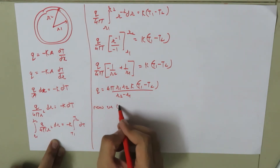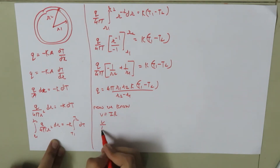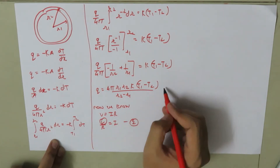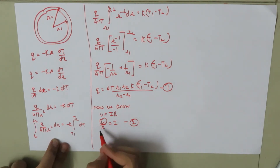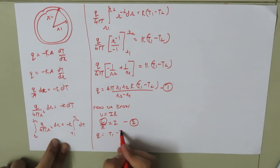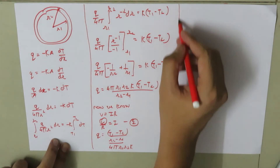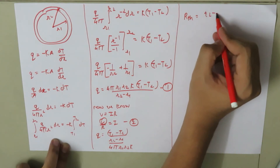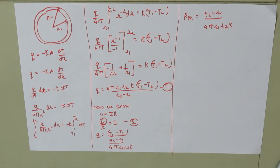According to Ohm's law, V equals IR, so V divided by R equals I, where V is the potential difference. Comparing with our heat conduction equation, we can write Q is equal to (T1 minus T2) divided by (R2 minus R1) over (4π R1 R2 K), where the denominator is called the thermal resistance for the sphere: R_thermal equals (R2 minus R1) upon (4π R1 R2 K).